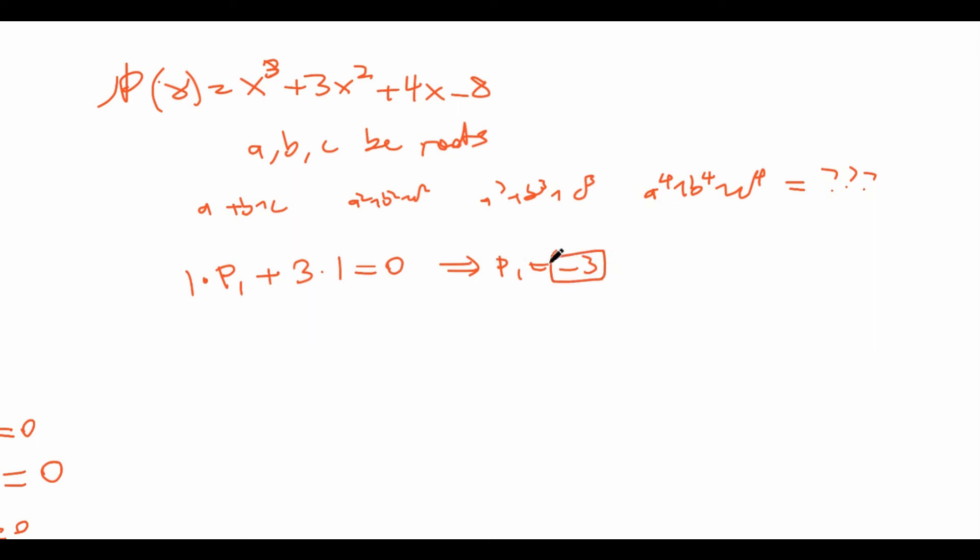So that's our first answer. Now next step: first coefficient is 1 times P_2 plus 3 times P_1 plus next coefficient of 4 times 2 equals 0. Well we already know that P_1 is equal to negative 3, so once we move that to the other side we get 9. Also we know that 4 times 2 is 8, so when we move to the other side we get 9 minus 8 which is 1. So P_2 is equal to 1.